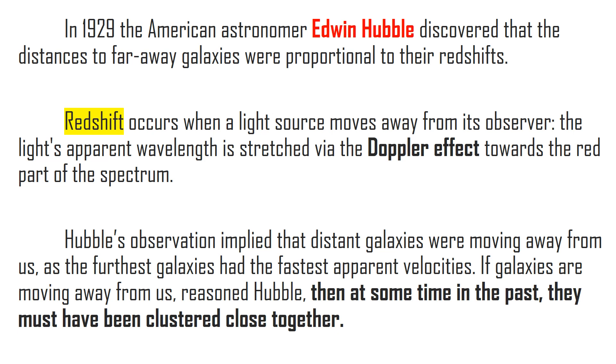The year 1929, when this American astronomer, Edwin Hubble, discovered that galaxies move away from each other, or galaxies move away from the Earth, which is actually proportional to their Red Shift. When we call it Red Shift, this is when a light source moves away from its observer, just like when you're holding a flashlight and throw it far from your distance. The light's apparent wavelength is stretched by the Doppler effect towards the red part of the spectrum. Hubble said that if galaxies are moving away from us, then at some time in the past, they must have been clustered close together.